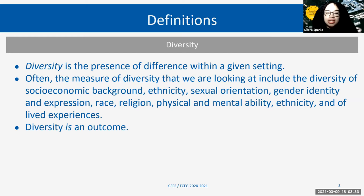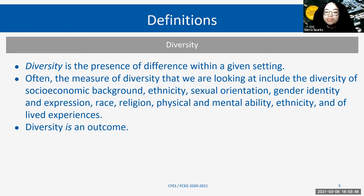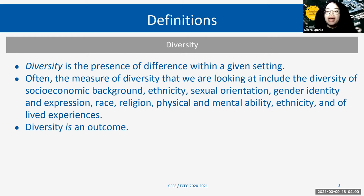When we're considering diversity, we look at the diversity of people and their experiences. So that can include their socioeconomic background, their ethnicity, their sexual orientation, their gender identity and expression, their race, their religion, their physical and mental ability, and their own lived experiences. And diversity is ultimately an outcome that we can achieve — you can basically measure how diverse a group of individuals is based on any given factor.